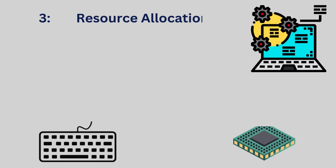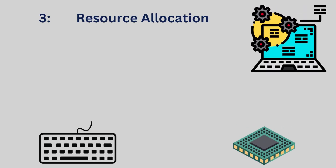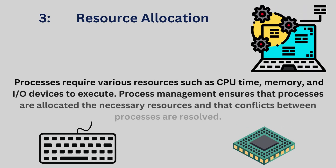Three: resource allocation. Processes require various resources such as CPU time, memory, and I/O devices to execute. Process management ensures that processes are allocated the necessary resources and that conflicts between processes are resolved.